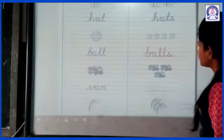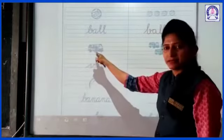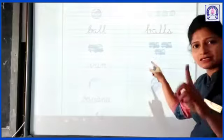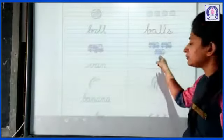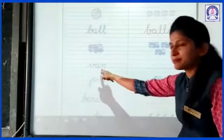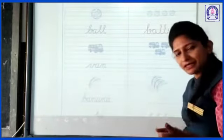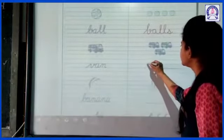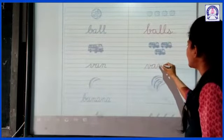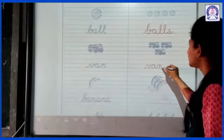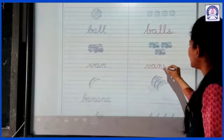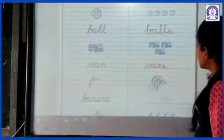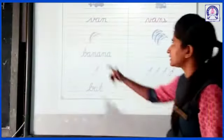Van. V-A-N, van. Okay? Aur yahan par ek se zyada van hai. To hum kya bolenge? Vans. Yeh spelling same hi likhni hai, lekin spelling ke end mein hum S ko add karenge. V-A-N, van — aur plural form mein likhne ke liye S add karo. Van, vans. Aage bahut saare examples hain.